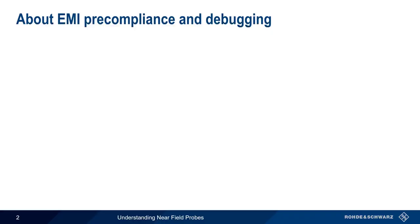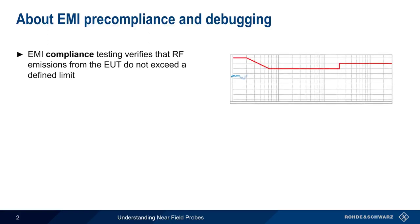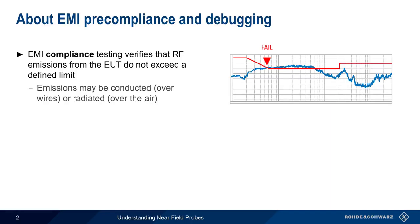As you may already know, EMI compliance testing verifies that radiofrequency emissions from an EUT, or equipment under test, do not exceed a specified limit. These emissions may be either conducted out of the EUT, via wires or cables, or be radiated out over the air.